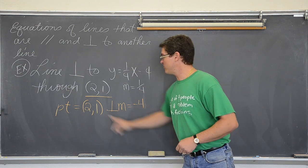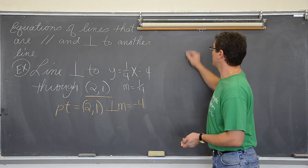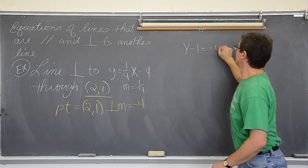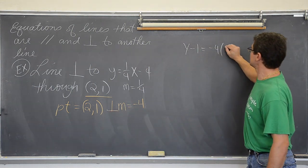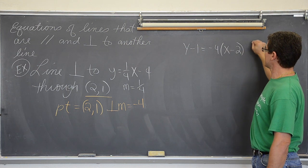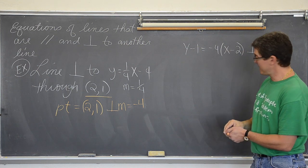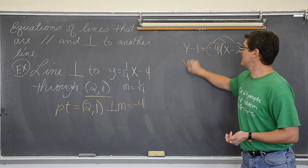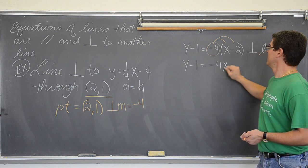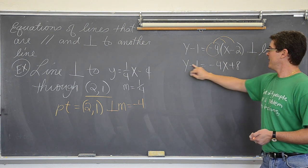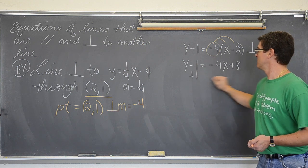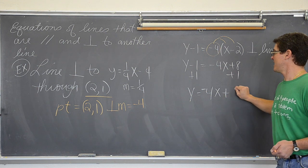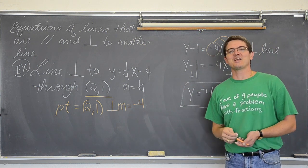At any rate we have a point and a slope and once again we have y minus y1 equals m times x minus x1 which is going to be x minus 2. And there is our perpendicular line. Which will then distribute this negative four through the parenthesis. And I am just taking the step again to put this into slope intercept. Negative times negative is positive. Add both sides by one. And we get y is equal to negative four x plus nine. Perpendicular line.